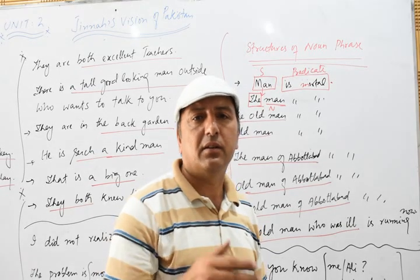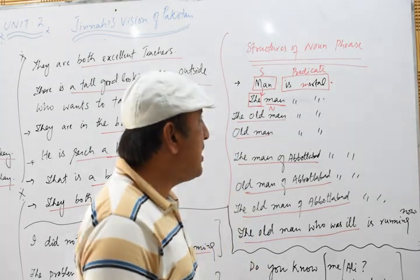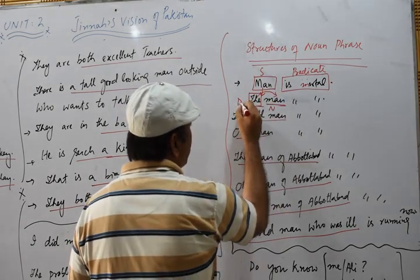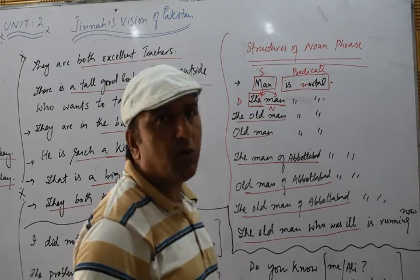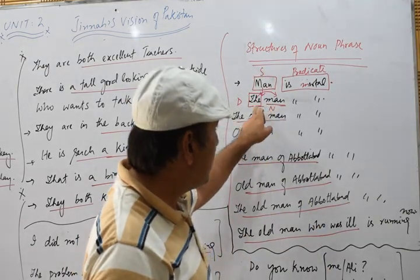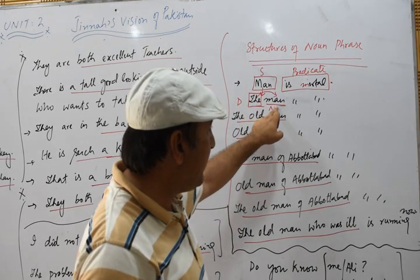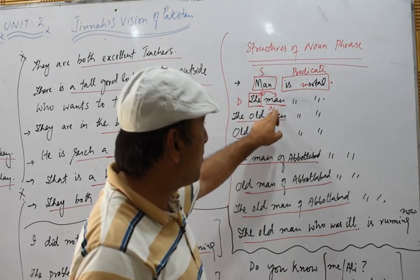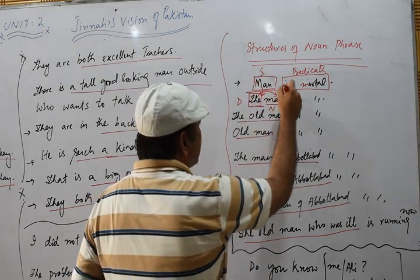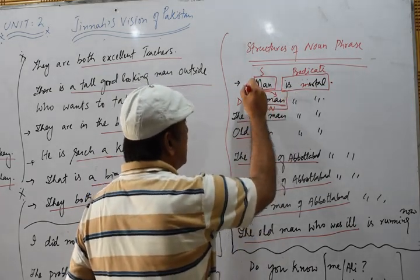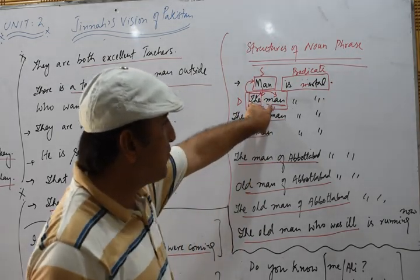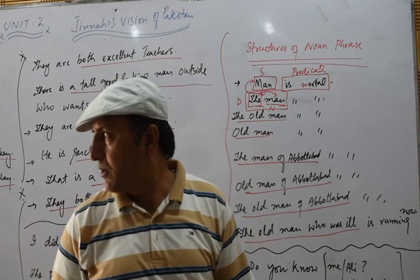But here in a noun phrase we call it a determiner. Any word which introduces a noun — like here 'the' introduces the noun 'man' — we call it a determiner. So this is a phrase working in place of 'man.' Though we have the keyword 'man,' combined as 'the man,' this is a noun phrase.